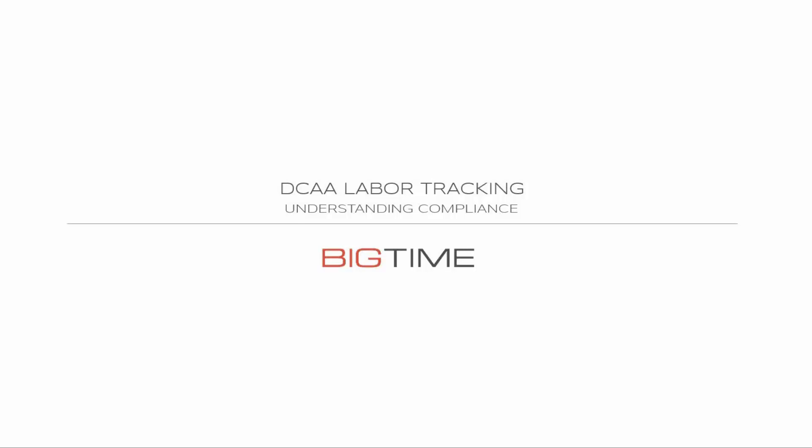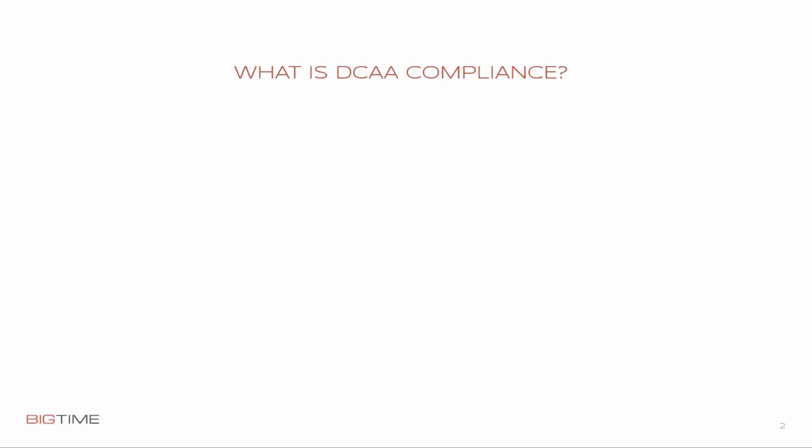One thing we typically struggle with at smaller firms — the 10 to 20 staff range — is the belief that you can get away with just an audit log for compliance. We'll walk through what an audit log in BigTime looks like, because it's a big piece of the puzzle, and why a regular audit log is not good enough. All of the things we do within the audit log are secure, maintained long-term, tagged, and dated appropriately. But we add capabilities — such as a user acknowledging when a time entry is outside of the standards and explaining why — which I'll walk through in subsequent videos.